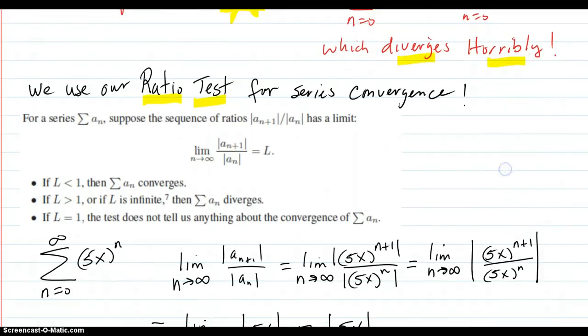The ratio test says you take the absolute value of the ratio of successive terms of the series. And if that limits out to L, if L is less than 1, then the series converges.